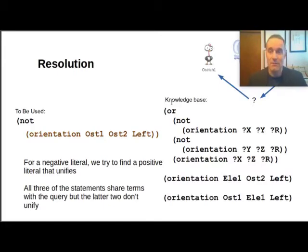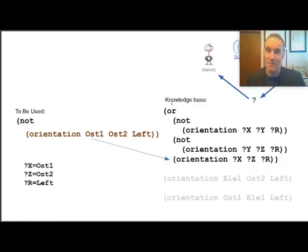We've got a choice of several literals there. The first two are negated. That doesn't work because we're trying to match with a negated literal. So we want to find a positive literal. The third literal in this rule does match. In fact, it unifies because it's all just variables for its arguments. Great, we found a match. We can do some unification now. We're going to ignore the negation because that's going to cancel out. We get this nice match - x goes to ostrich one, z becomes ostrich two, and r becomes left. You can see the substitution list on the left of your screen.